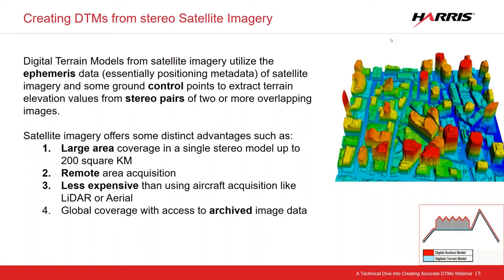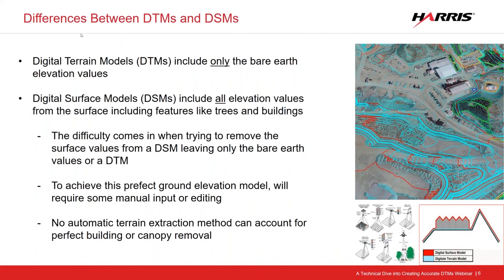Let's discuss the differences between DTMs and DSMs. Digital terrain models are DTMs, and DSMs are digital surface models. A surface model is anything you can see from above the earth — trees, buildings, cars — anything that's on the surface. Whereas a DTM is just the terrain: wherever the cars weren't there, it would be part of the terrain. Essentially anything that is the ground, that isn't manmade, no obstructions.